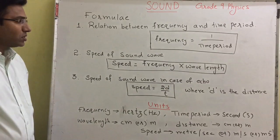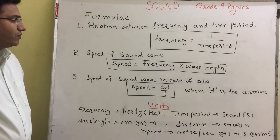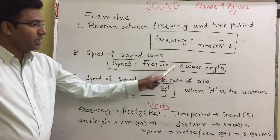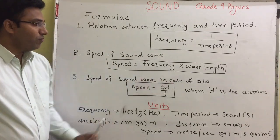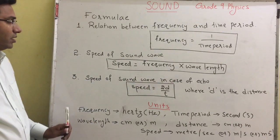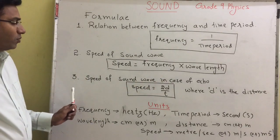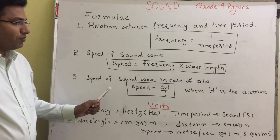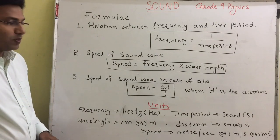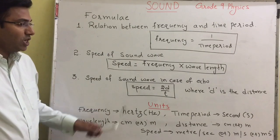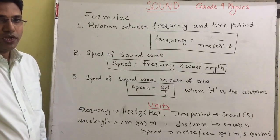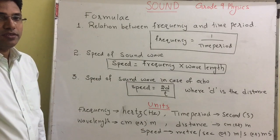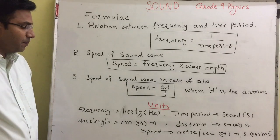The second formula is the speed of a sound wave: speed equals frequency multiplied by wavelength. The third formula is the speed of a sound wave in the case of echo: speed equals 2d divided by t, where d is distance.